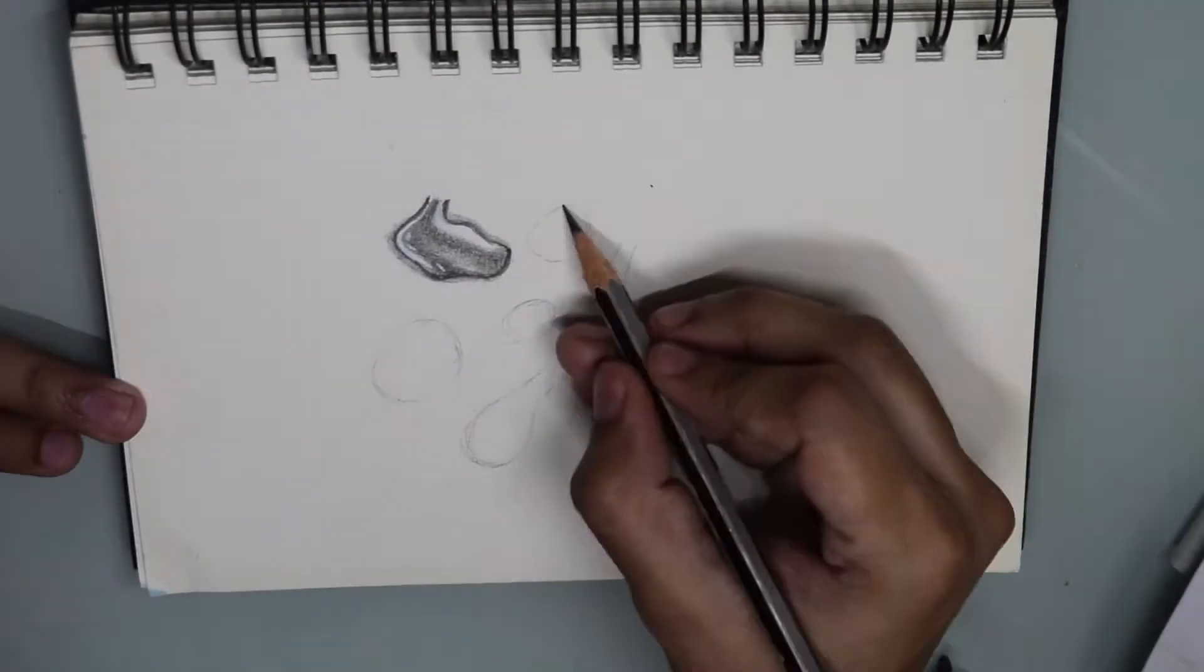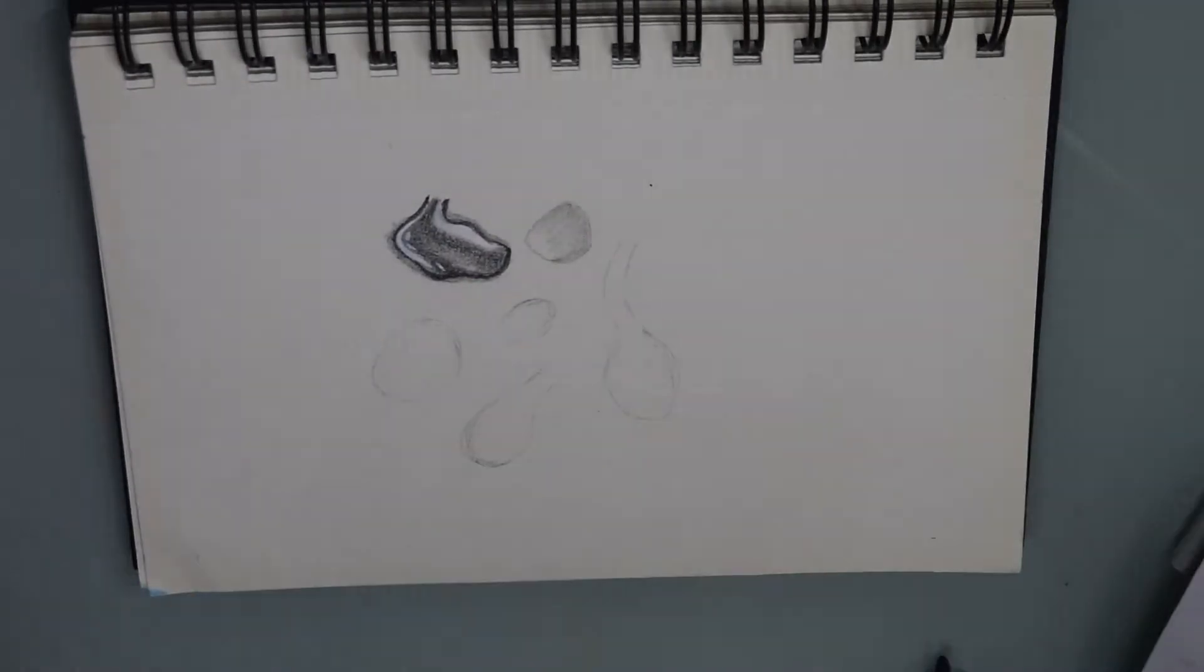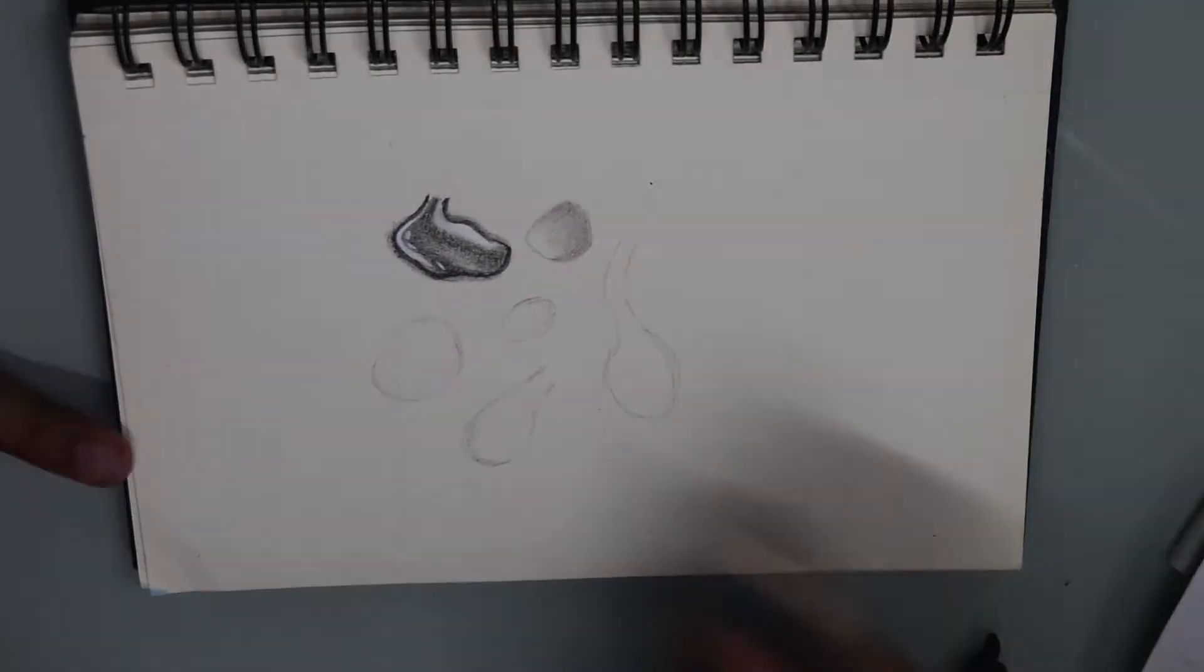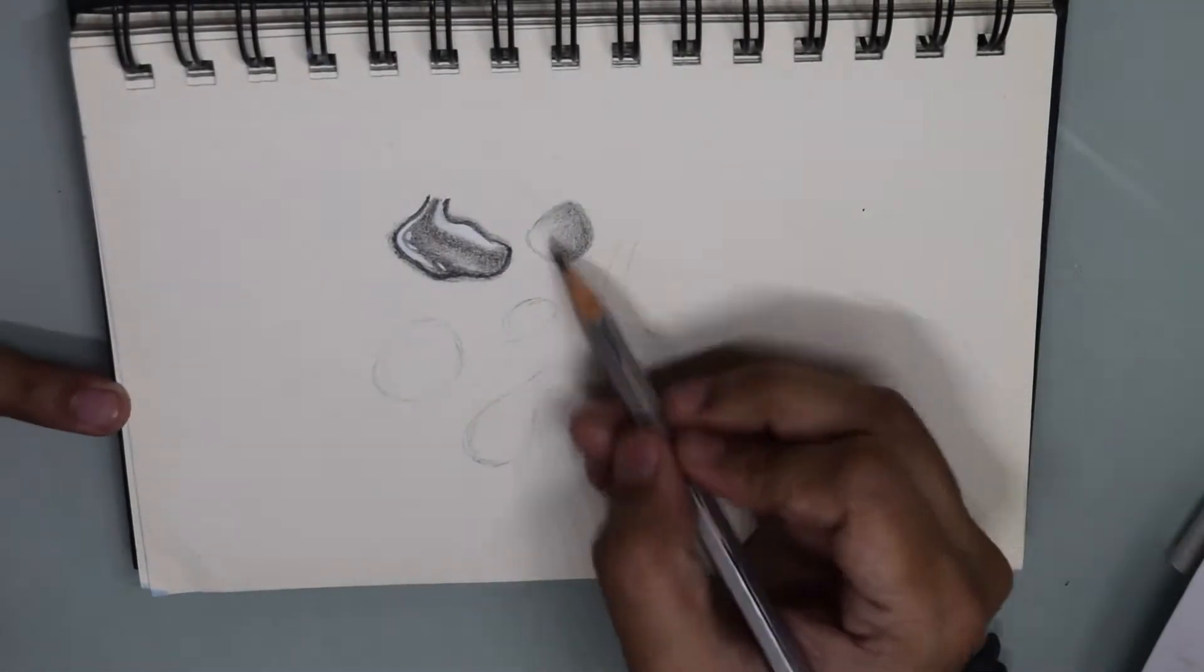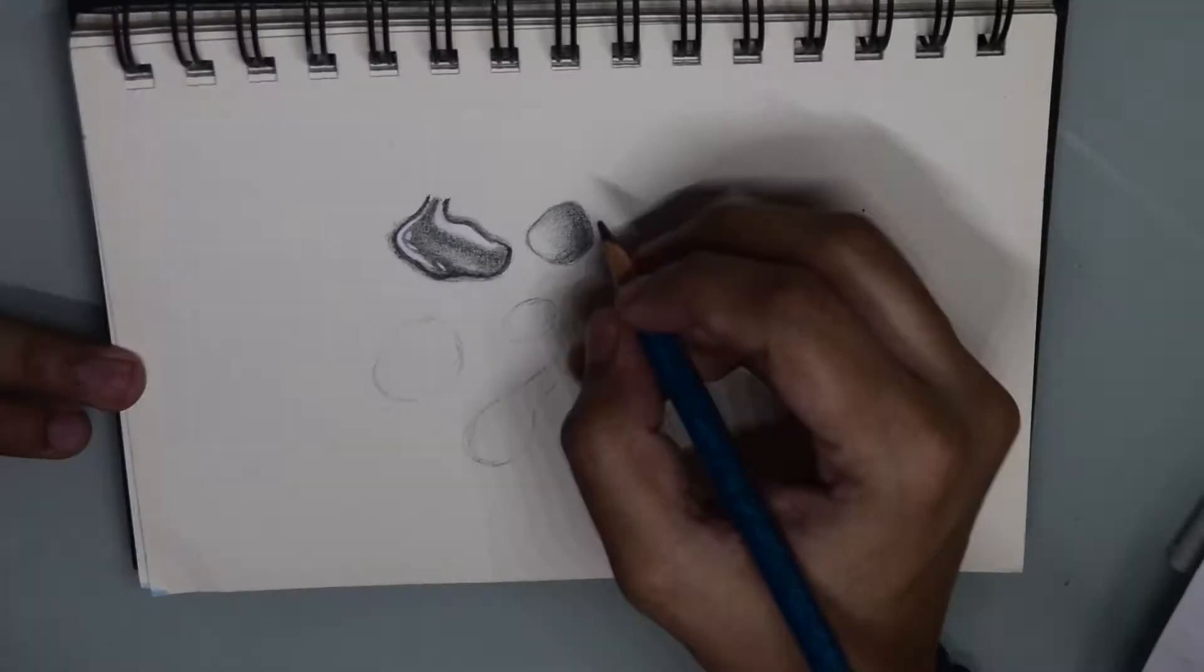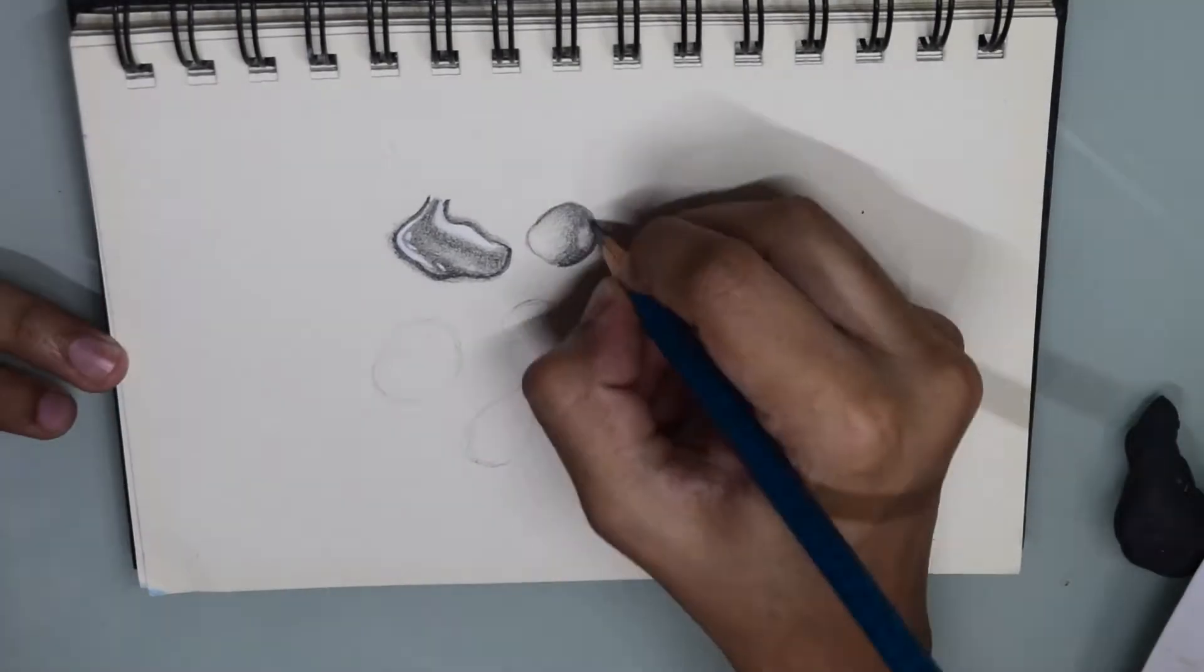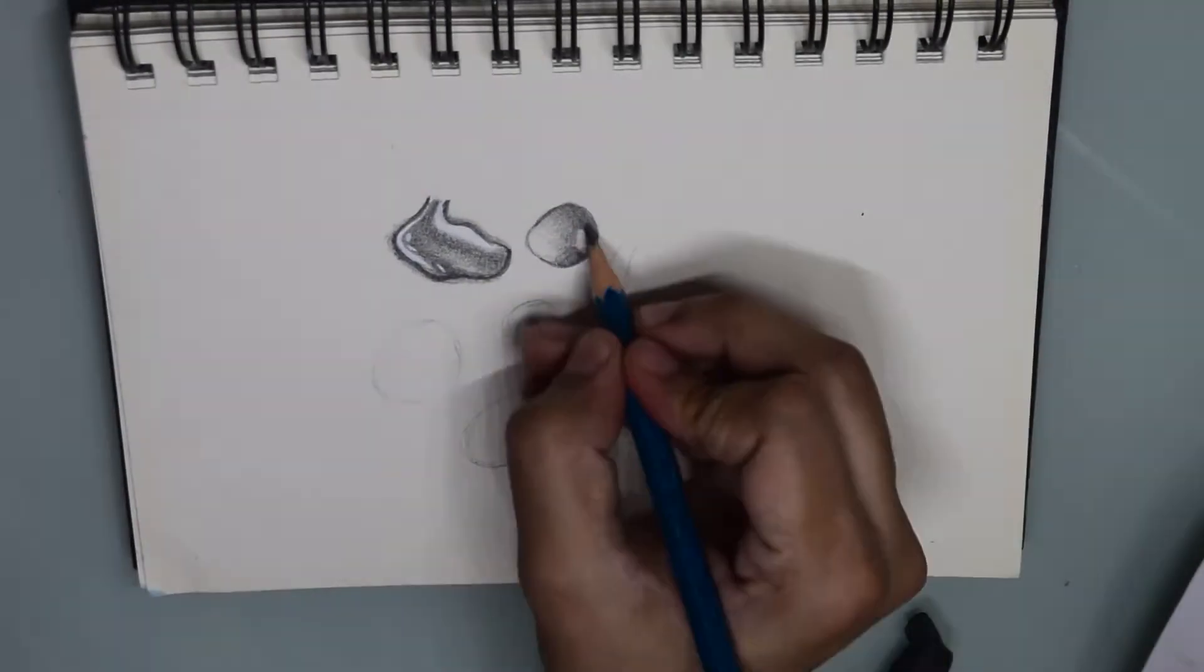So on to the tutorial. First, I sketch the shape of the water drop with an HB pencil. Then I start shading with light pressure. The sides of the water drop will be darker, so I use a 6B pencil for darkening the sides of the water drop.